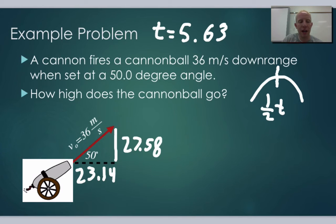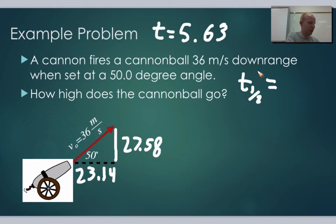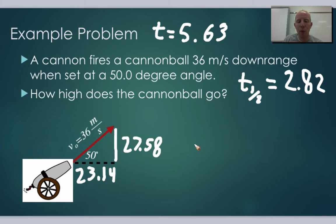Dividing 5.63 by 2 gives us t_half equal to 2.82 seconds. Then we can just plug that into the y equation: y equals v₀y times t_half, plus ½g times t_half squared.